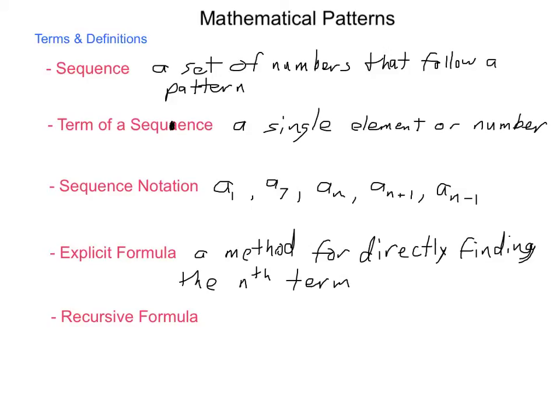Now if we want the 5th item, we go a sub 5, just like function notation. It's f of x and then f of 5.